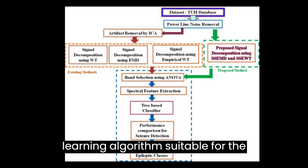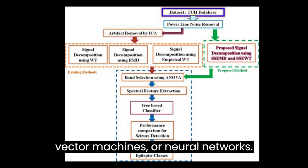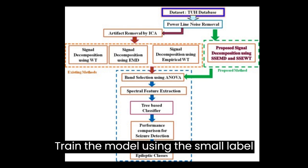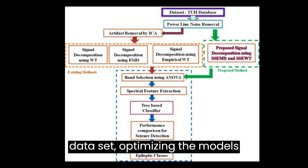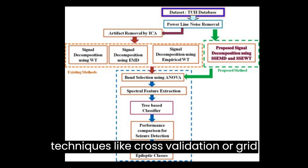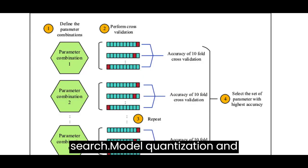Model training and optimization. Select a machine learning algorithm suitable for the task, such as decision trees, support vector machines, or neural networks. Train the model using the small labeled dataset, optimizing the model's parameters or hyperparameters using techniques like cross-validation or grid search.